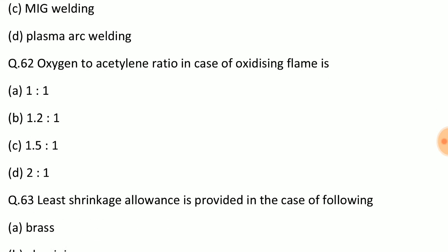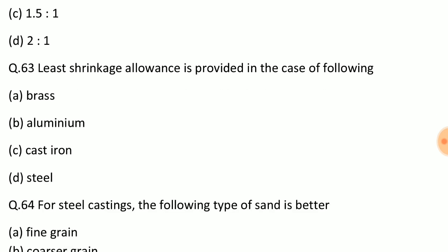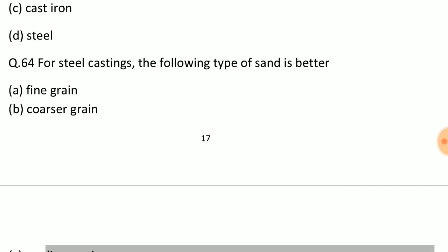Question: Oxygen to acetylene ratio in case of oxidizing flame is? Answer: Option C, 1.5 ratio 1. Question: Least shrinkage allowance is provided in the case of following? Answer: Option A, brass. Question: For steel castings, the following type of sand is better? Answer: Option B, coarser grain.